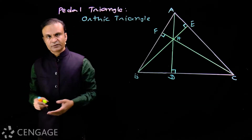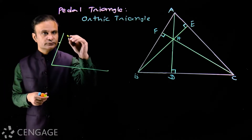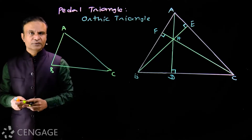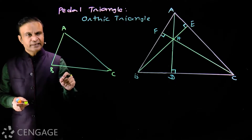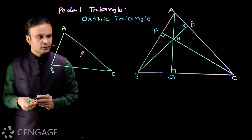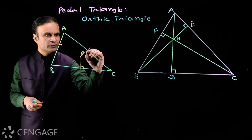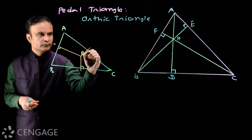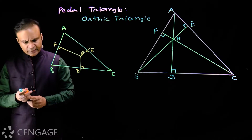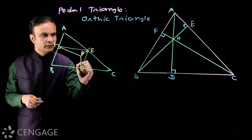Let's see what a pedal triangle is. Consider triangle ABC with a point P in the plane of ABC. This point P may be either inside, outside, or on the triangle. From point P, draw perpendiculars on the sides. The feet of these perpendiculars are D, E, and F. The triangle formed by these feet of perpendiculars is called the pedal triangle — here, triangle DEF.